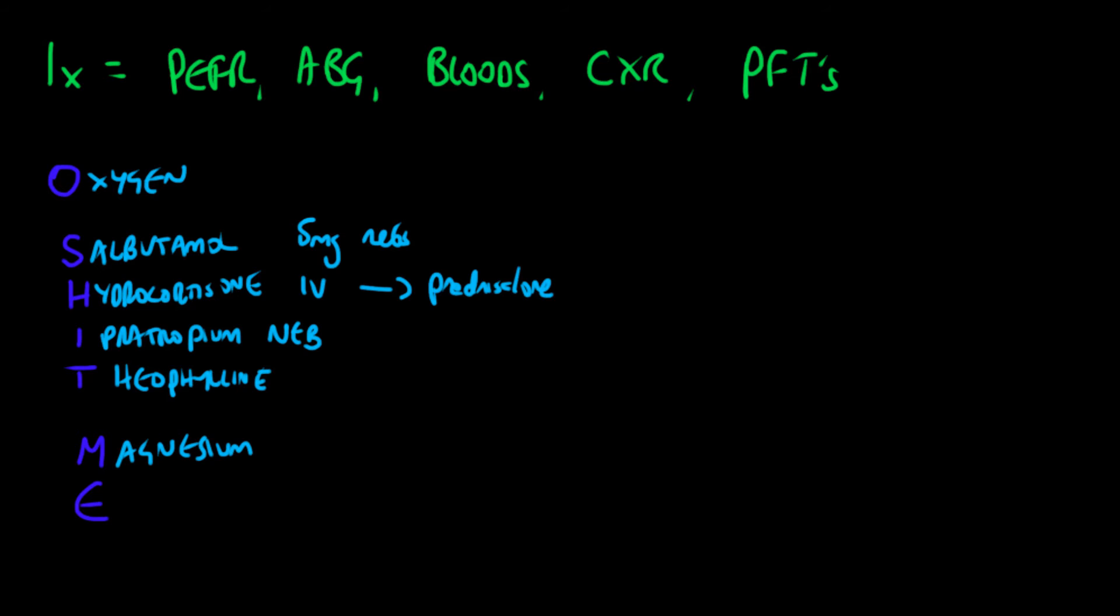M is magnesium sulfate. In severe asthma attacks, you can give 2 to 5 grams of this. You need to watch as it can cause hypotension, a drop in BP, but it does relax the smooth muscles in your lungs.